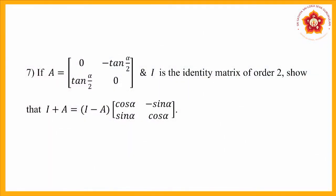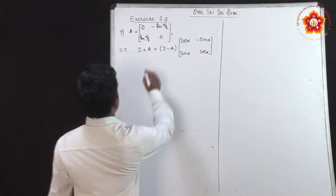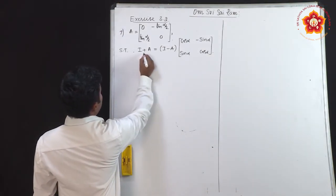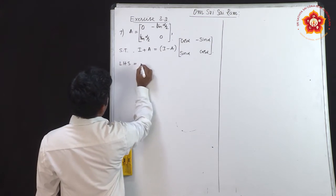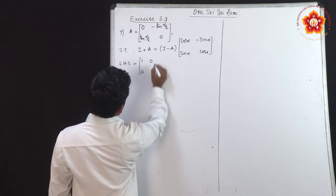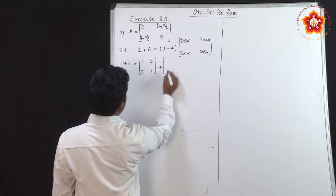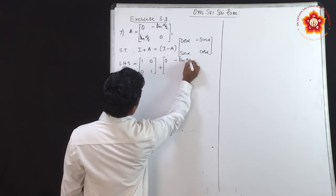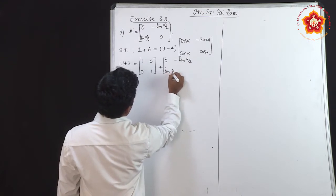Next problem: matrix A is given and we have to show that (I+A) = (I-A) × [cos α, -sin α; sin α, cos α]. Let us find LHS first. I+A = [1,0; 0,1] + [0, -tan(α/2); tan(α/2), 0] = [1, -tan(α/2); tan(α/2), 1].